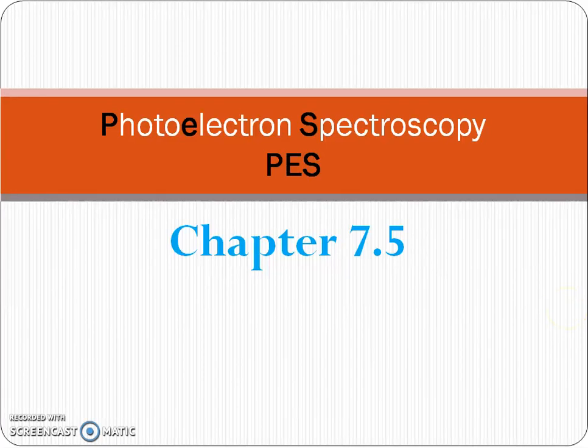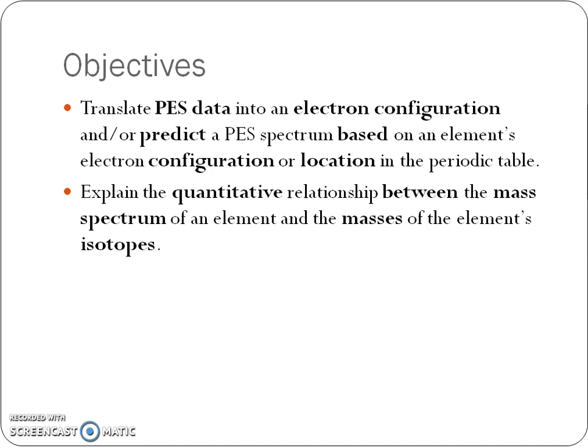This is Mrs. O'Neill for AP Chemistry Chapter 7.5, something I had to put in for the new curriculum for AP Chemistry a few years ago. Your objective is to translate PES data and what it means about the electron configuration and location of an element on the periodic table. We also want to quantitatively have a relationship between the mass spectrum and the masses of those isotopes. So there's two different spectrums we're going to talk about: the PES and the mass spectroscopy.